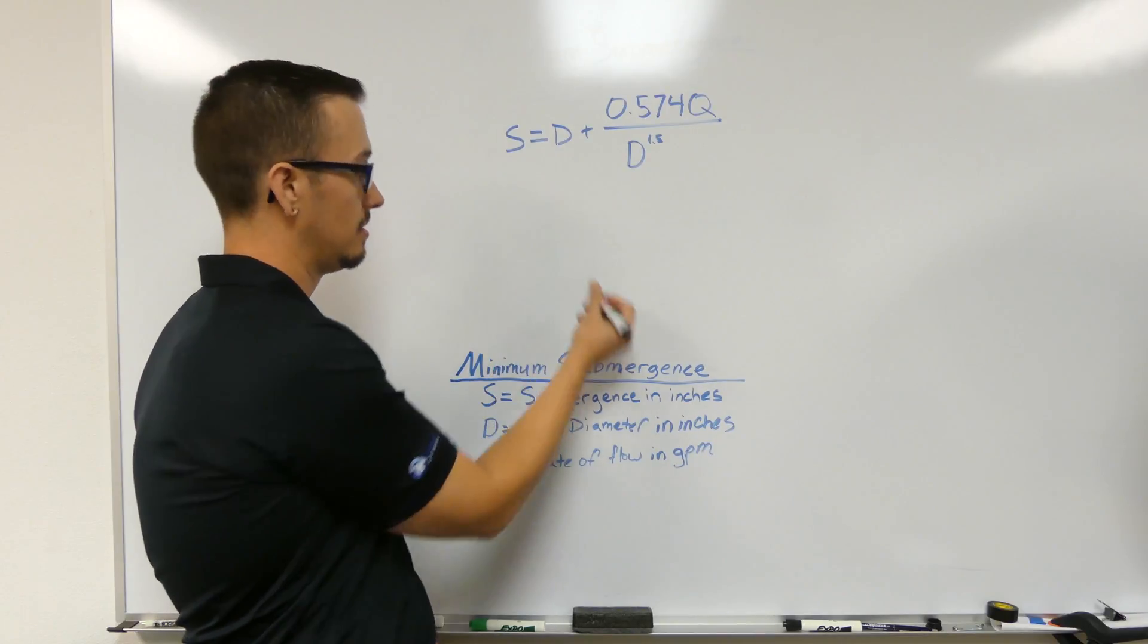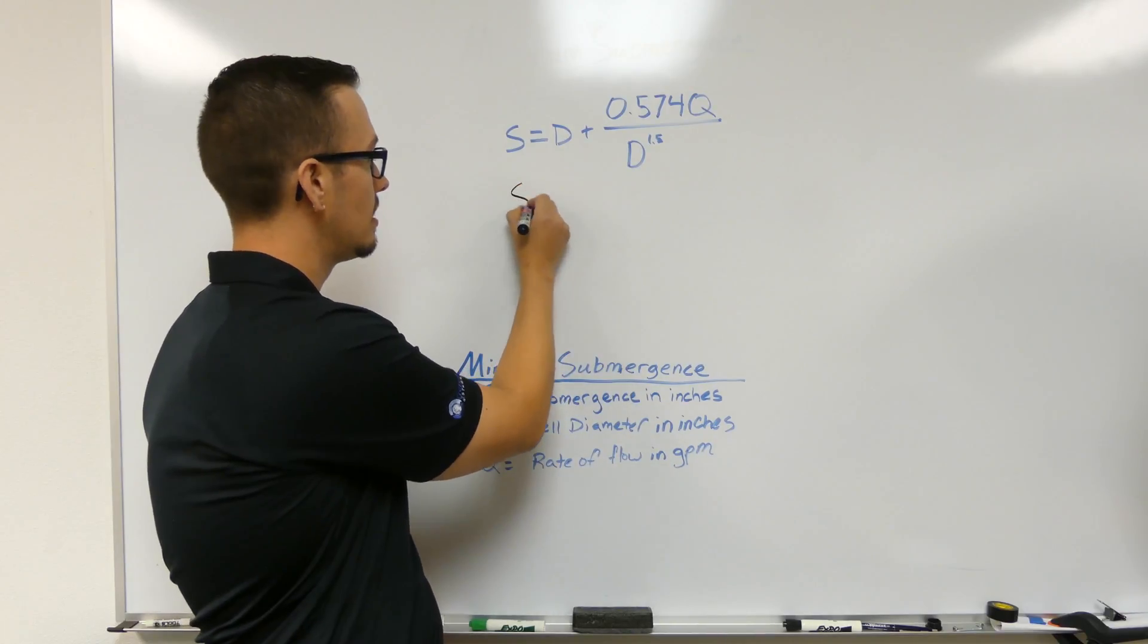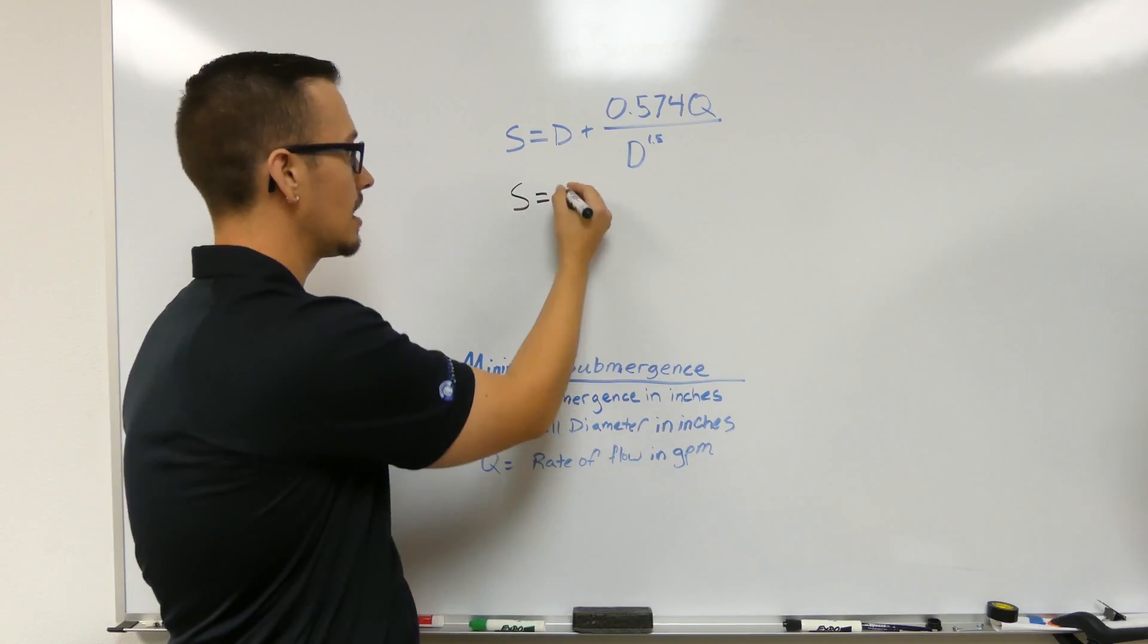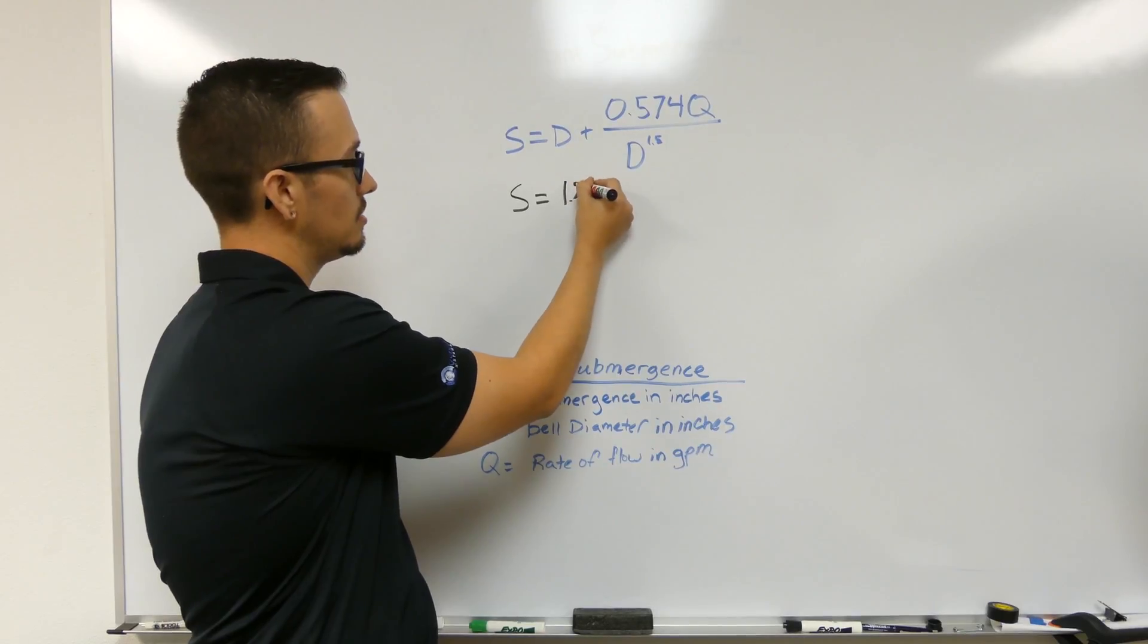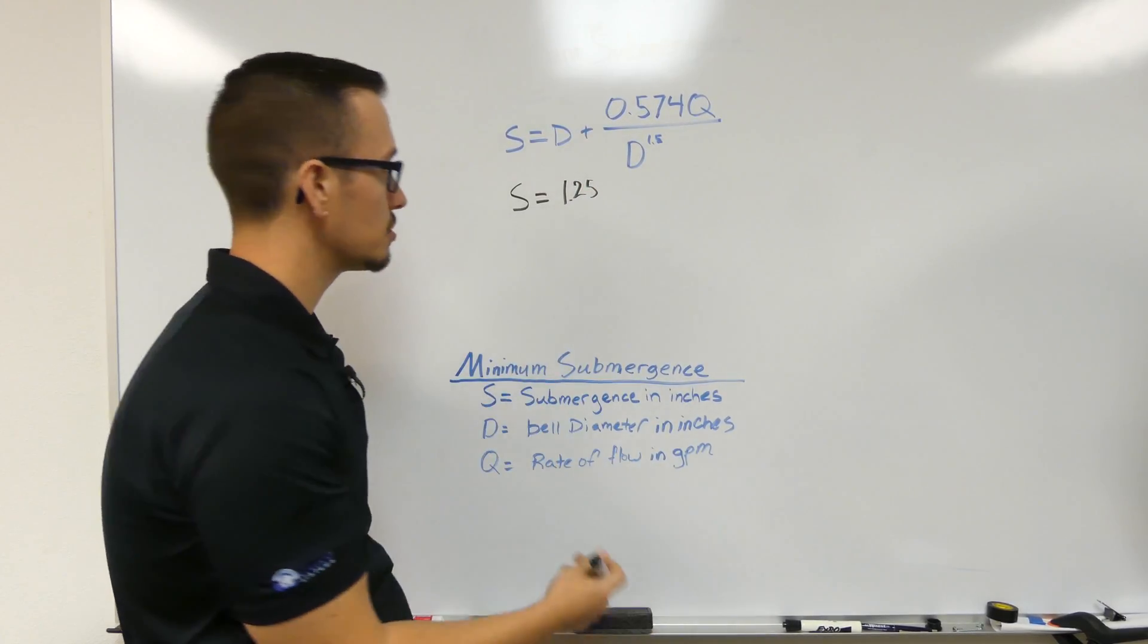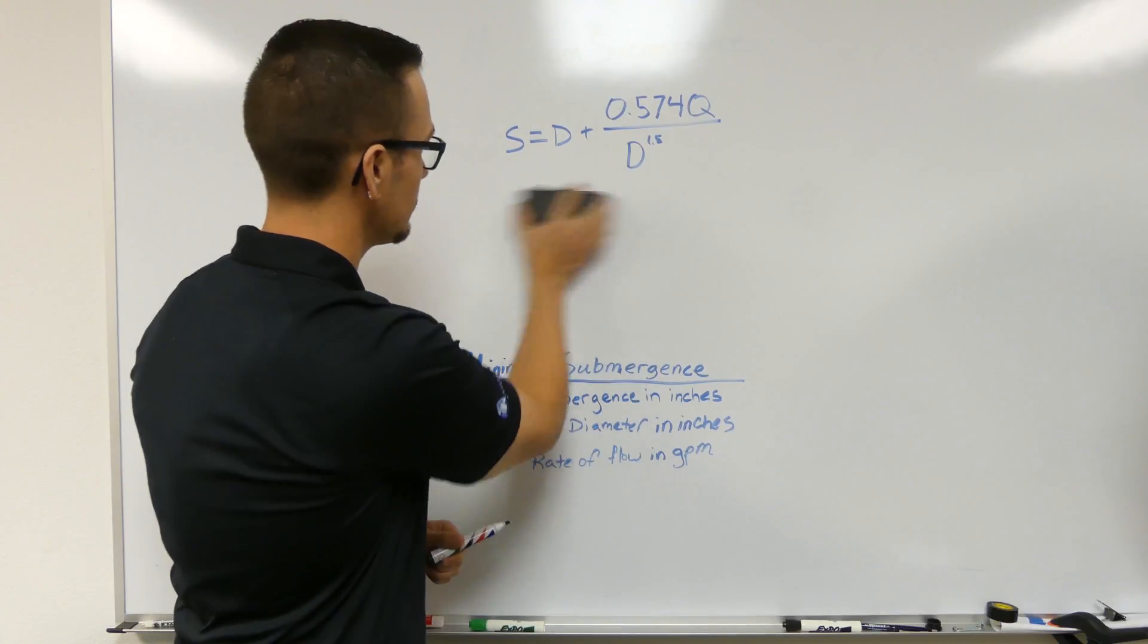So I guess I'm writing in black. S equals D, D being the bell diameter. We'll use a common pipe size, inch and a quarter. That's pretty common for a suction line or a submersible pump. I probably need to give myself some more room here.